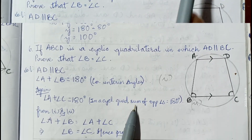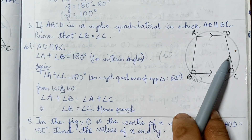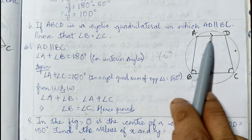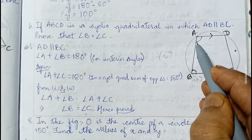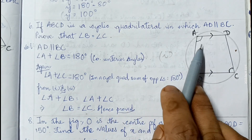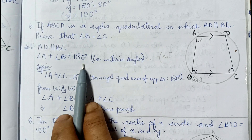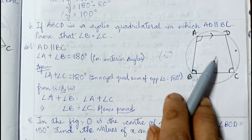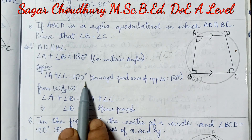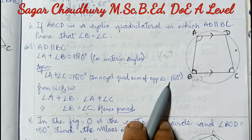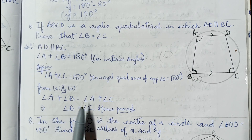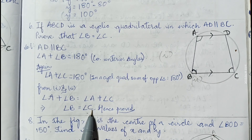Question number six: ABCD is a cyclic quadrilateral in which AD is parallel to BC; show that angle B equals angle C. Since AD is parallel to BC, angle A plus angle B equals 180 degrees by co-interior angles — equation one. Also, sum of opposite angles in a cyclic quadrilateral gives angle A plus angle C equals 180 degrees — equation two. From equations one and two, angle A plus B equals angle A plus C, so cancelling A, angle B equals angle C.